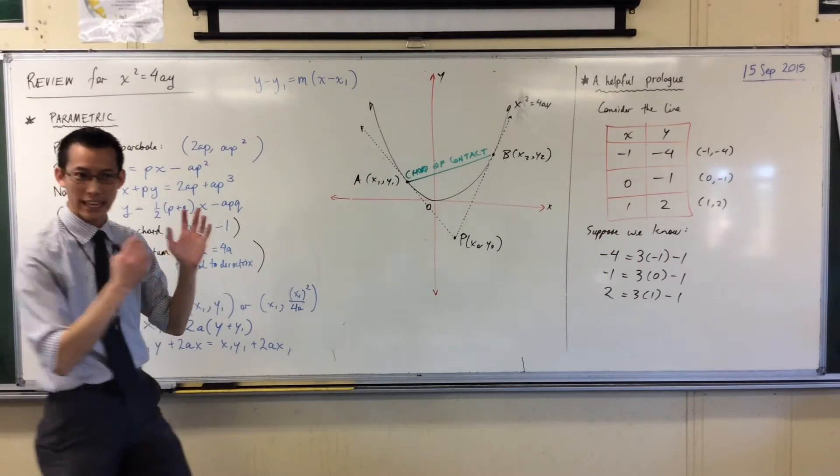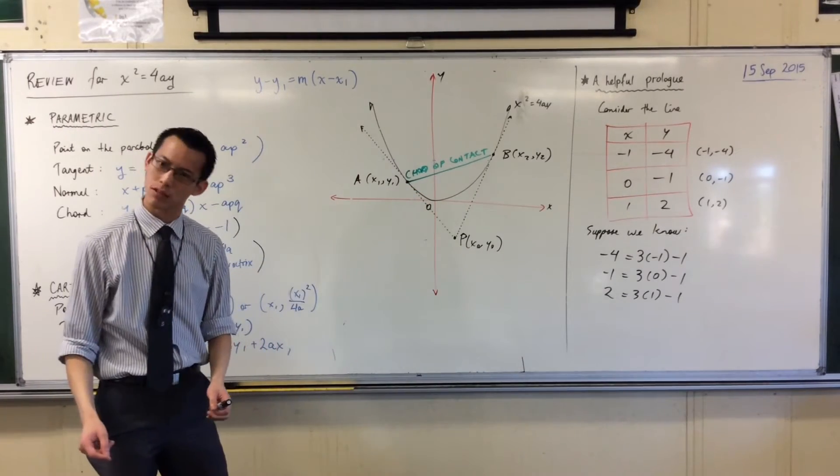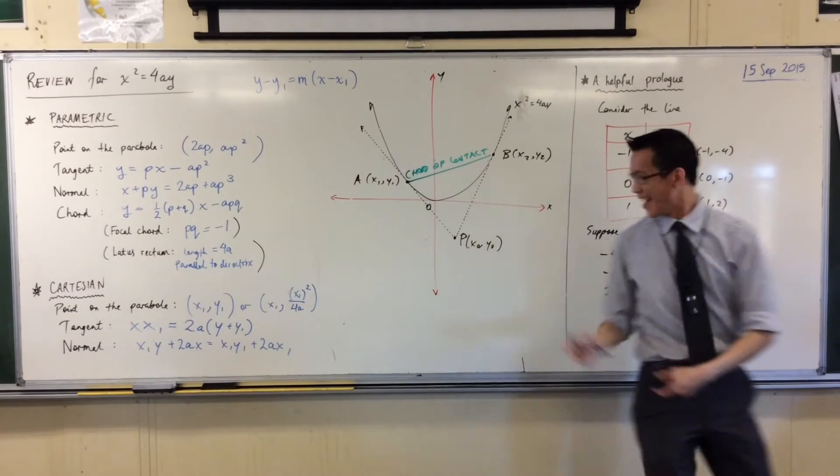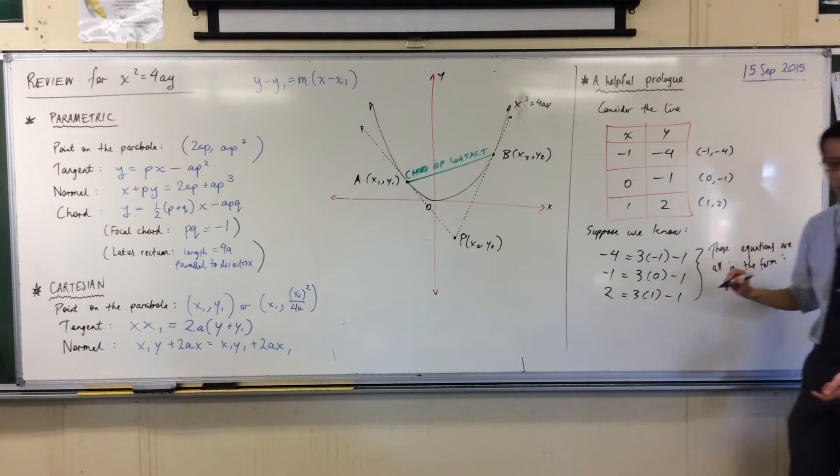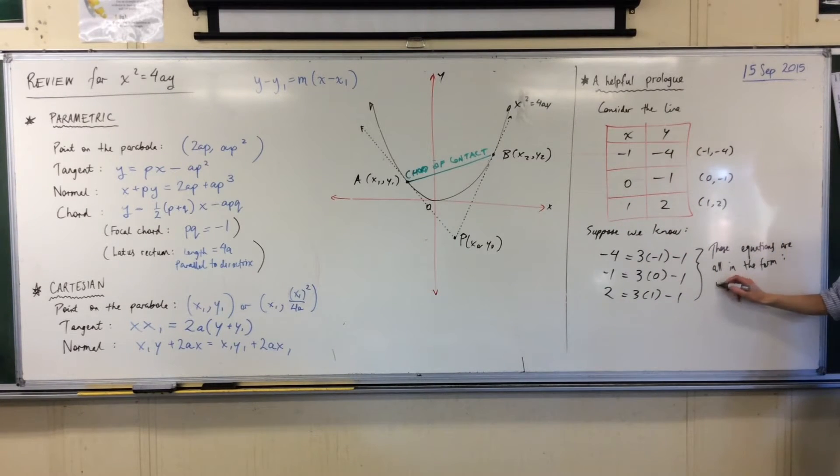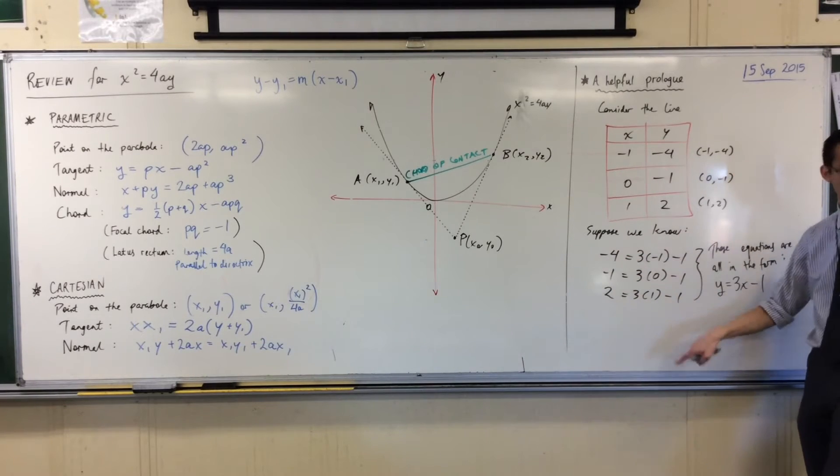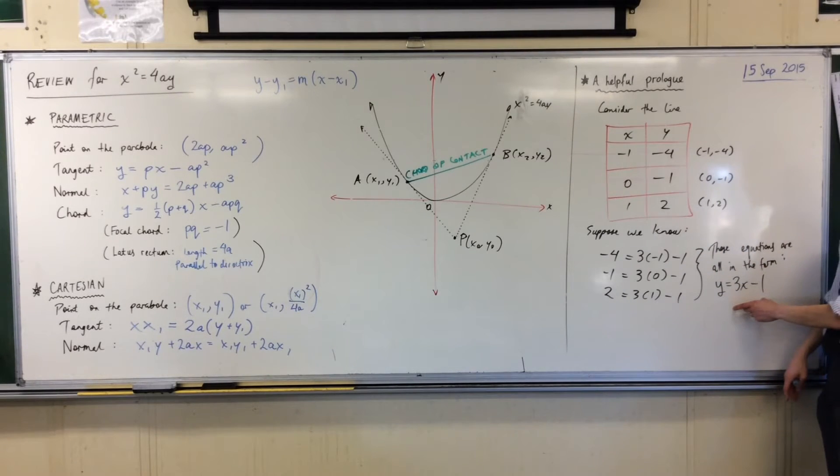Here's what I want us to write down because this is like the key part of the logic in the proof for this. These equations are all in the same form. They're all in the form y equals three x take away one. I put in y and x there because these numbers are changing, they are variable, whereas the three and the minus one, they are constant. They're always there every single time.